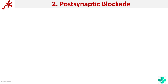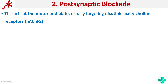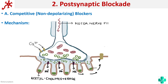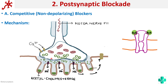Next we will move on to postsynaptic blockade. In postsynaptic blockade the drug is usually targeting the acetylcholine receptors. The acetylcholine that is released must act on the nicotinic acetylcholine receptors, and those receptors are affected by these drugs. Based on their mechanism we can classify them into competitive or non-depolarizing blockers as well as depolarizing blockers. In the normal neuromuscular junction, acetylcholine released binds to its sites on the nicotinic receptor, the channel opens, and there is an entry of sodium.